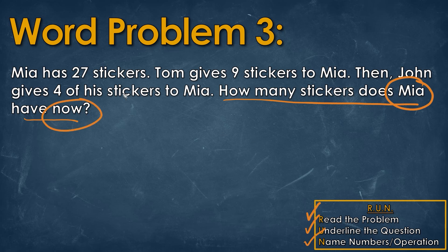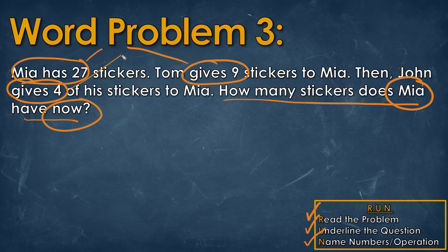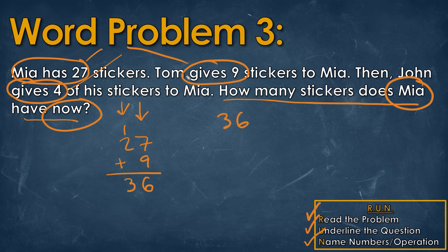Now we'll name those numbers and the operation. Originally Mia has 27 stickers, Tom gives 9 stickers, then John gives 4 stickers. The word gives means that Mia is going to be adding on stickers, so each time we add these numbers we're just adding them all together. We'll start with the first two: 27 plus 9. We always count from the right column — 7 plus 9 is going to be 16. We put the 6 right here and carry the 1 over to the top of the next column. Now 1 plus 2 is going to give us 3. So when Tom gives her stickers, that's going to be 36.